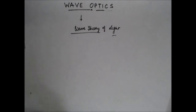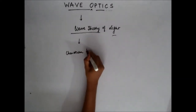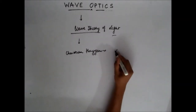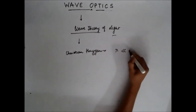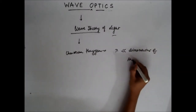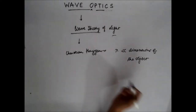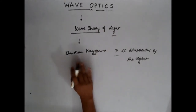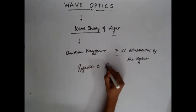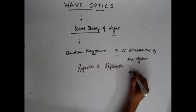The wave theory of light was first proposed by Christian Huygens. What he said was that light is actually a wave and the wavelength of the wave is very small compared to the dimensions of the objects we measure. Using this concept, he proved the laws of reflection, and he said that when light travels from a rarer to a denser medium, the speed of light decreases.